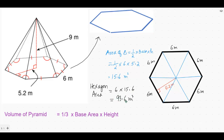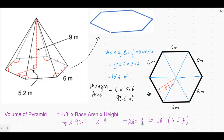93.6 square meters is the area of the whole hexagon, which is the base of this pyramid. Now let's plug these values into the formula. One-third times base area 93.6 times height — the height is this red line, which is 9 meters. The answer is 280.8, and after rounding to 3 significant figures, the final answer is 281 cubic meters. That was the first method of finding the volume of the pyramid.